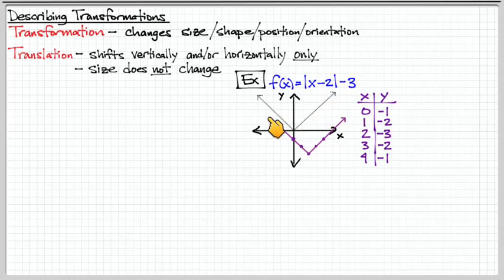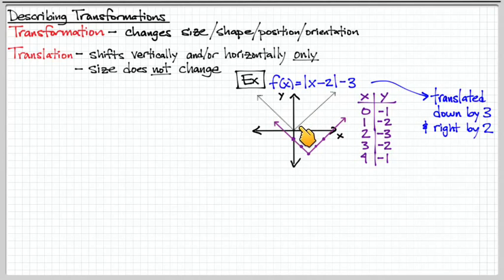This translated version will just be moving to a different point. In this case, it was translated down by three units. It went down by three and to the right by two units. So translation, that's our first type.